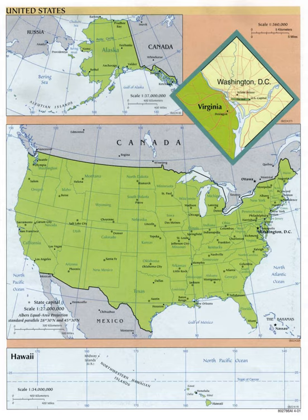There are approximately 30,000 incorporated cities in the United States, with varying degrees of self-rule.